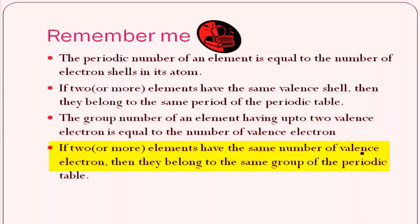Fourth point: if two or more elements have the same number of valence electrons, they belong to the same group of the periodic table. For example, if two elements have electronic configurations KLM 2,8,1 and KLMN 2,8,8,1, they each have one valence electron and hence belong to the same group.